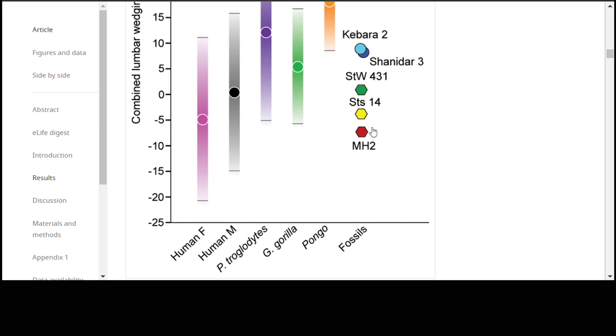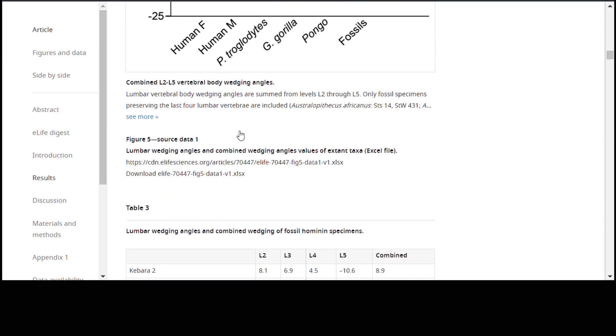But what's interesting here is that Australopithecus sediba misses the range of chimpanzees and gorillas, and in terms of combined lumbar wedging is within the range of modern humans. So, that's very interesting. They have a lumbar curve which is well within the range of modern humans.